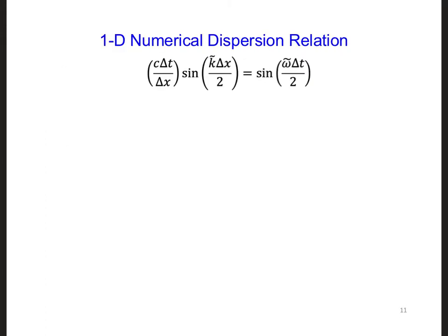The equation that we ended up with in module FDTD3 is shown here. We solved this equation for omega tilde so that we could see under what conditions omega tilde would become a complex number.